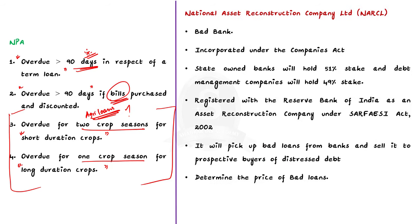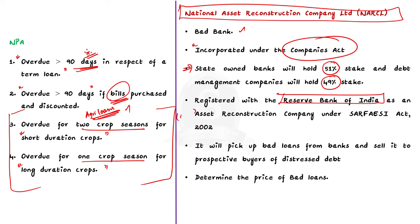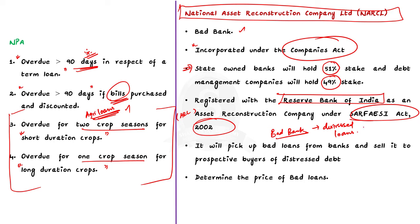Now let us move on to National Asset Reconstruction Company Limited or NARCL. NARCL is a bad bank created by the government, incorporated under the Companies Act. State-owned banks will have a 51% stake and debt management companies will hold 49% stake in the NARCL. It is registered with the Reserve Bank of India as an Asset Reconstruction Company under the SARFAESI Act 2002. A bad bank is a financial institution that primarily deals with distressed or non-performing assets. Its primary purpose is to separate the non-performing assets from the performing or healthy assets of the bank, helping the main bank focus on its core functions without being weighed down by troubled assets.